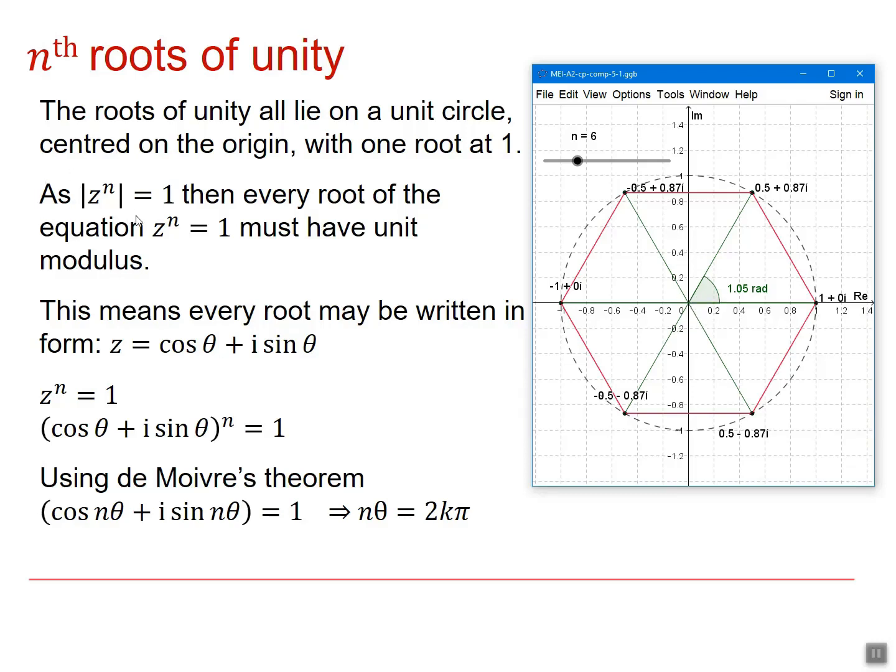So because the mod of z to the n is equal to 1, every root of the equation z to the n equals 1 must have a unit modulus. And this means that every root can be written in the form z equals cos theta plus i sine theta.